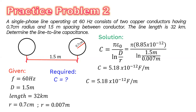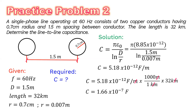To find total capacitance, we eliminate the per-meter unit by multiplying by 1,000 meters per kilometer and by the total line length of 32 kilometers. All units cancel, leaving the capacitance equal to 1.66 times 10 to the negative 7 farads, or simply 166 nanofarads.